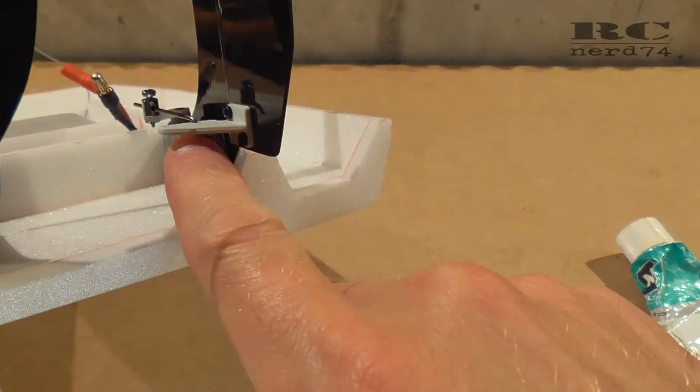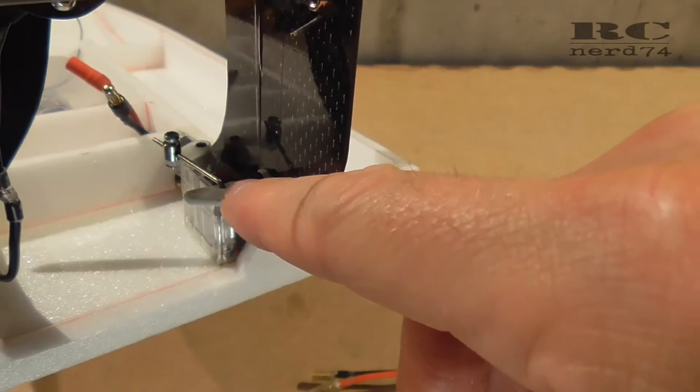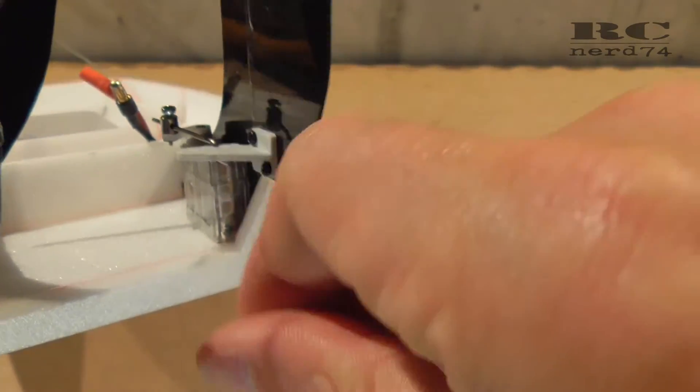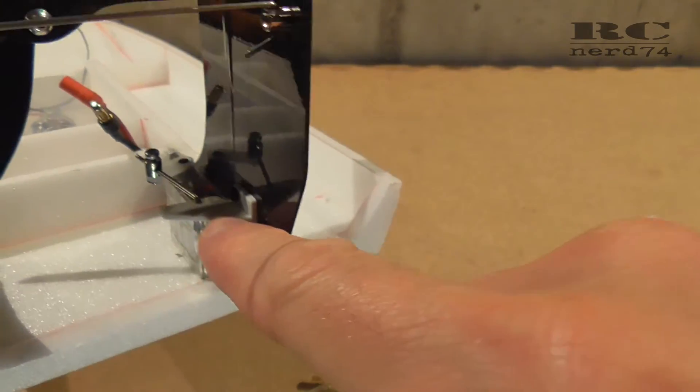To connect the servo to the rudder I simply used some RC plane hardware, just a simple steel link which connects the servo and the rudder horn.